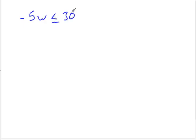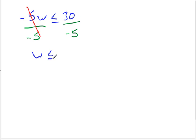Now let me show you a couple examples of where it is different than solving equations. This example: negative 5w is less than or equal to 30. We're going to divide both sides by negative 5, which cancels the negative 5s, leaving us with w is less than or equal to negative 6.